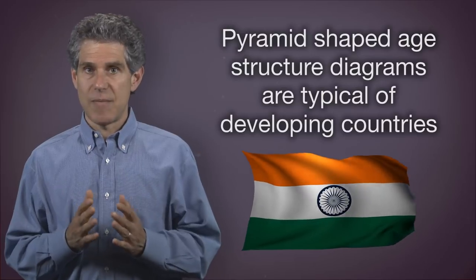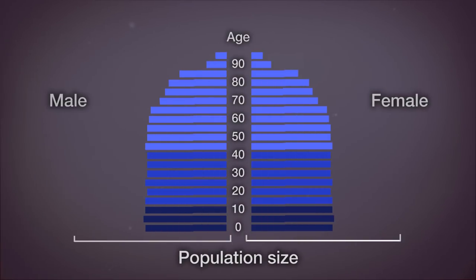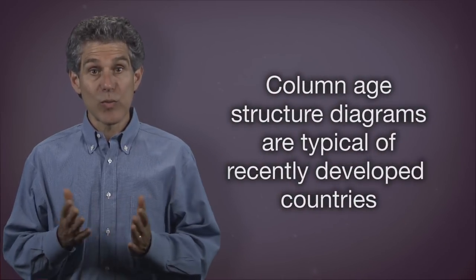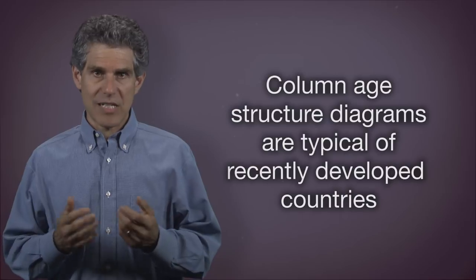The second type of age structure diagram is more of a vertical column. Very little difference between the number of individuals in the younger age groups and older age groups is apparent. In countries with column-shaped age structure diagrams there is low population growth or approaching no growth at all. This is more typical of developed countries or recently developed countries. Some examples are the United States, Canada, and Sweden.